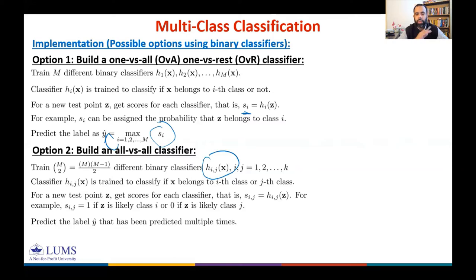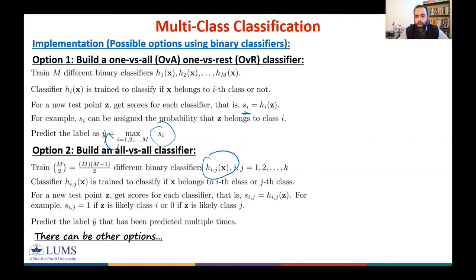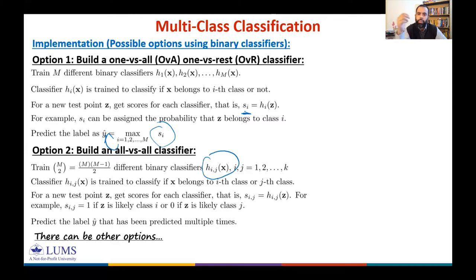So these are two options showing how to implement an m-class classifier using a binary classifier. Obviously there can be other options. Now let's move towards how to evaluate the performance of a multi-class classifier. We know how to evaluate a binary classifier, but what do precision, recall, and specificity mean for a multi-class classifier? How do we define these measures?